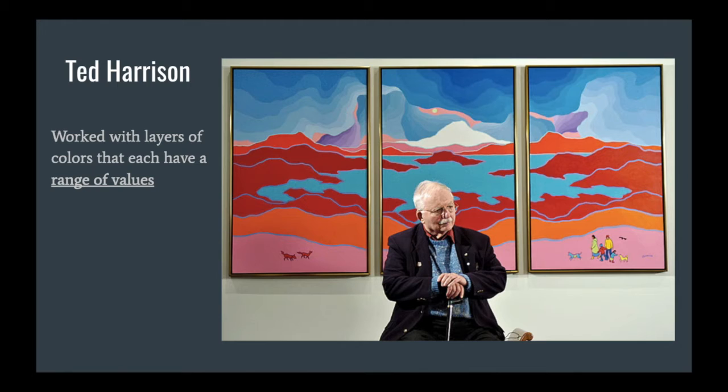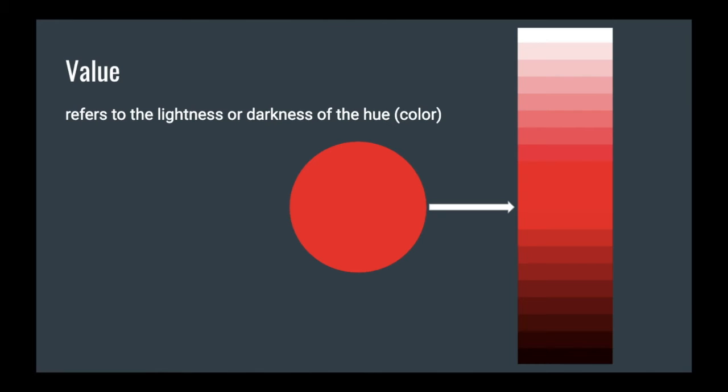So this is Ted Harrison right here in front of one of his paintings. And as I've just mentioned, he works a lot with those layers of values. So he works with a range. And I'll talk about values right here.